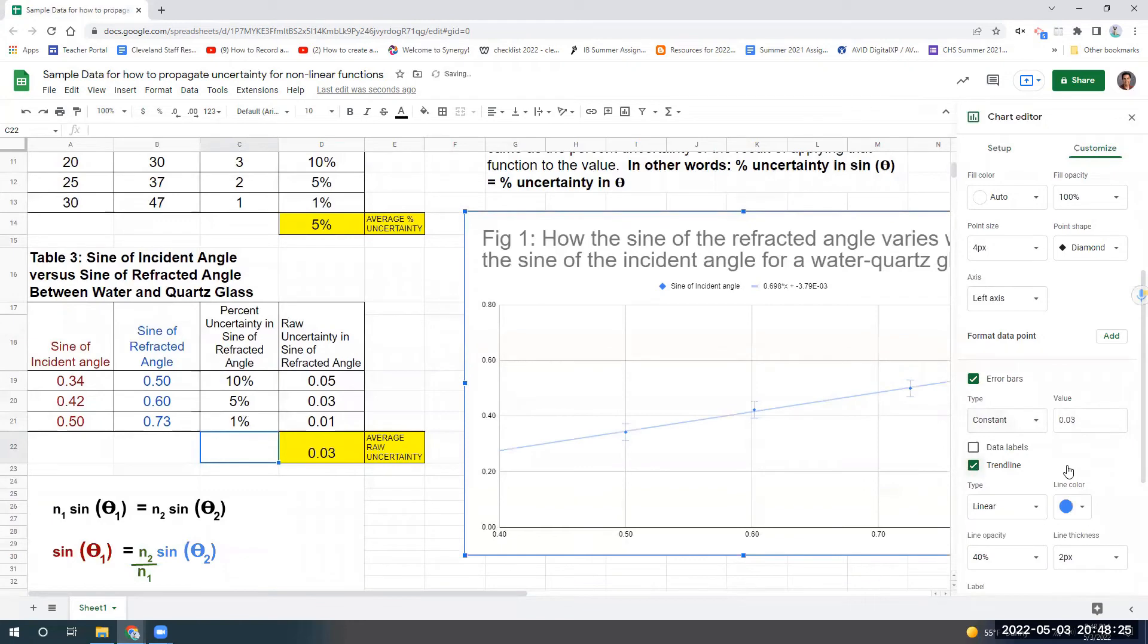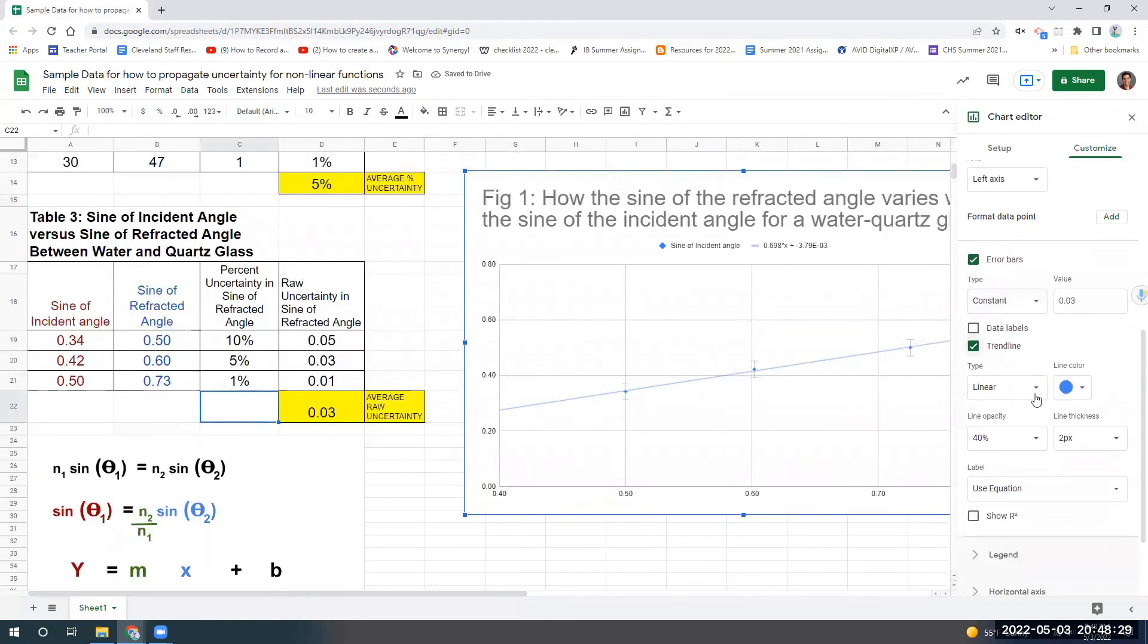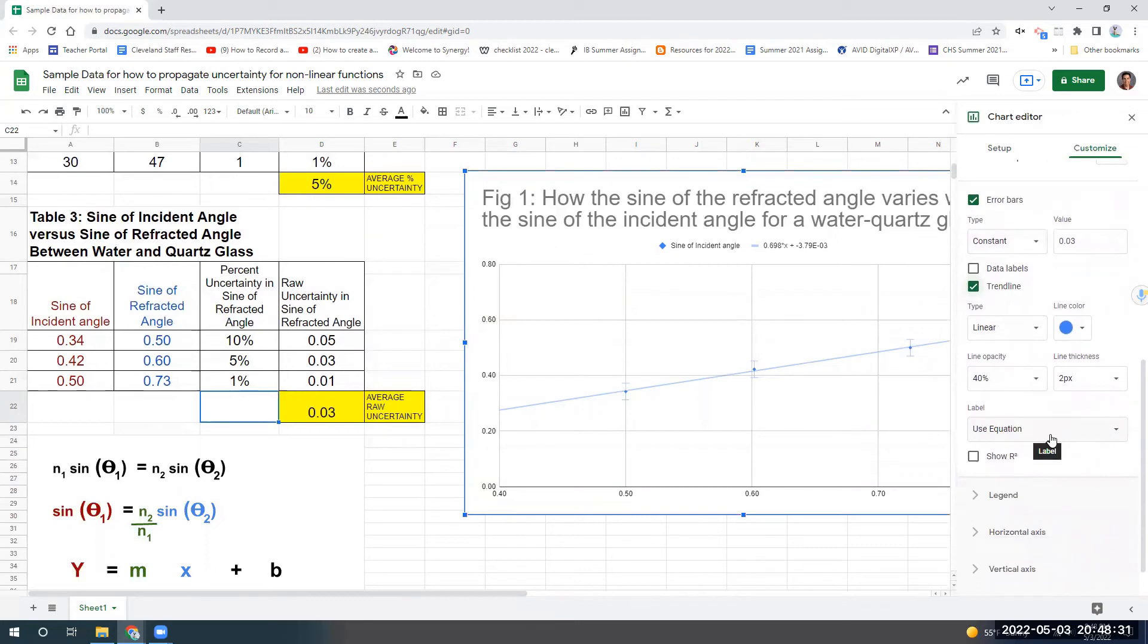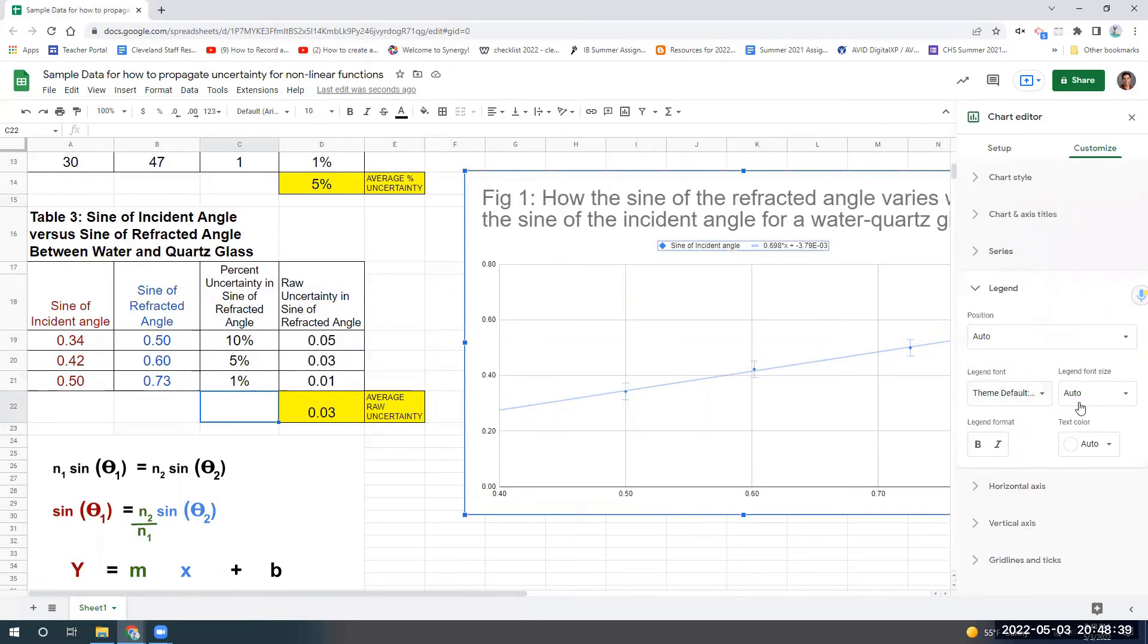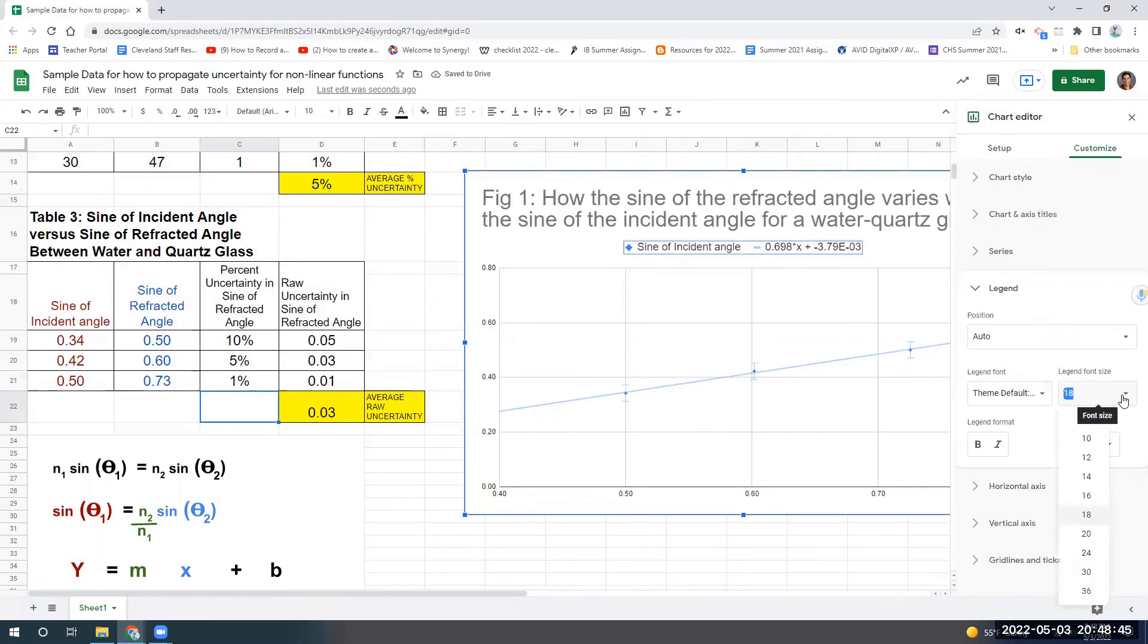And then I do want a trend line. And I want it to be linear. And look, lo and behold, it's looking pretty linear. Awesome. And then I do want to get a label using the equation and notice it's up there. And let's just see if I can do something. Yes, let's make that bigger. I'm just going to make that really large because that's a really important piece of data there that I want to look at.